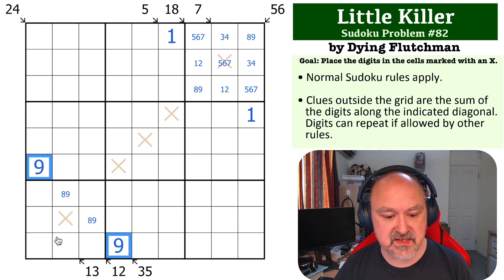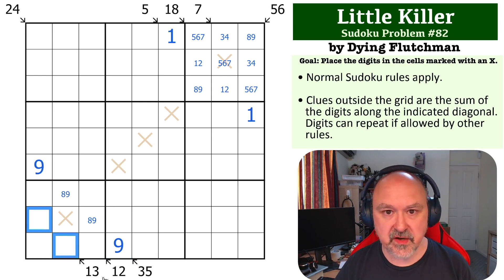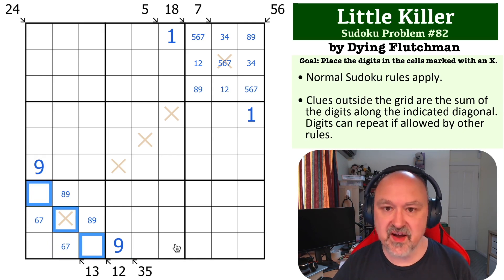In order to get to 18, these need to be two 9s. Now we've got to make 13 without an 8 or a 9. The maximum digits we have left are 6 and 7 - six and seven gets us exactly to 13.